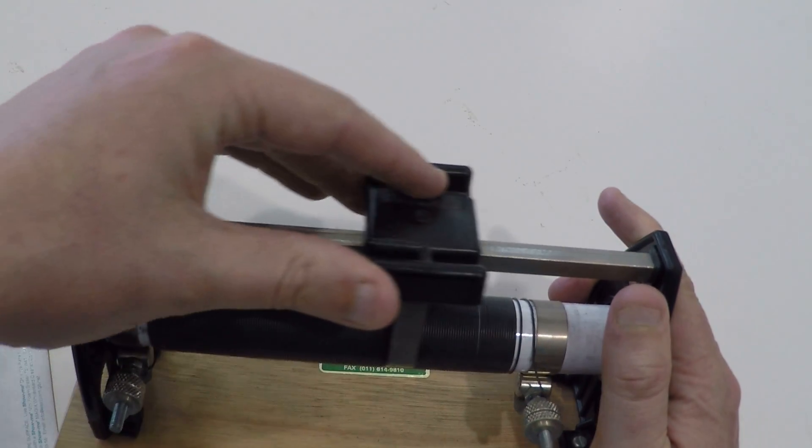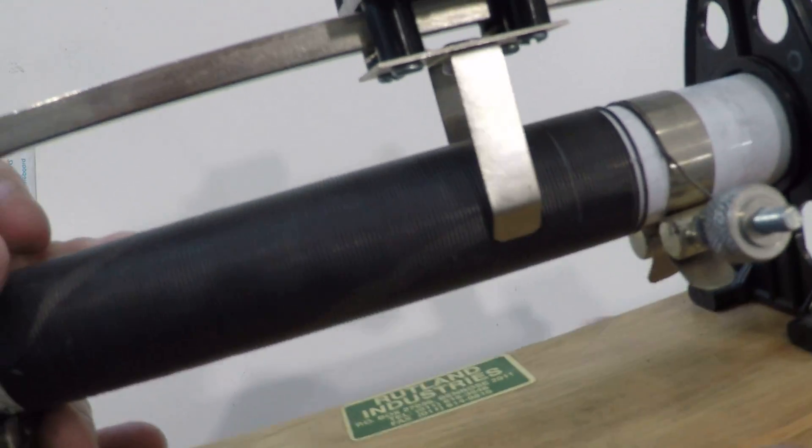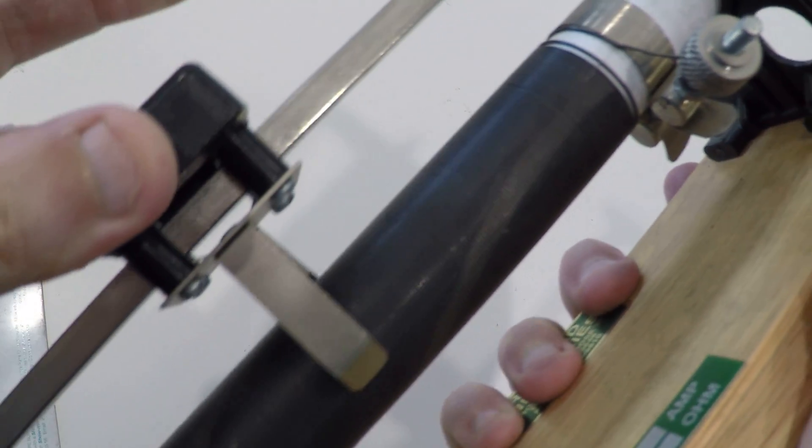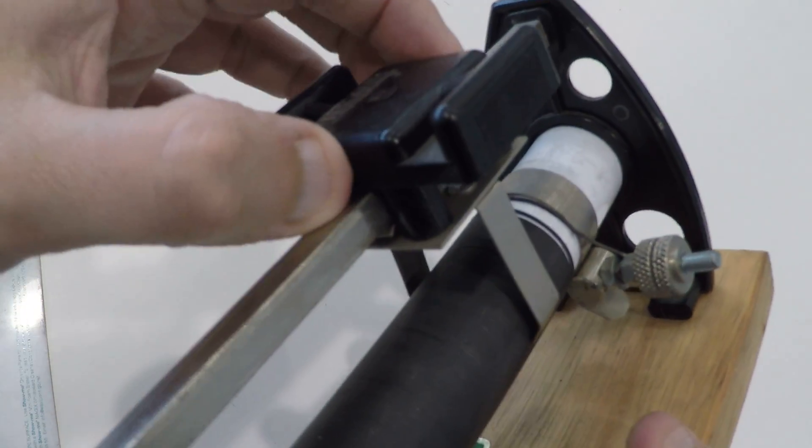And then there's this thing here that slides across. If you can see here, there's a contact, so it's making contact with the wire as it slides along here.